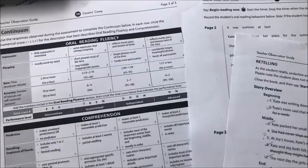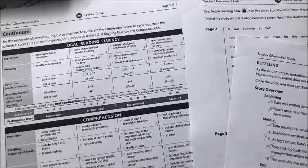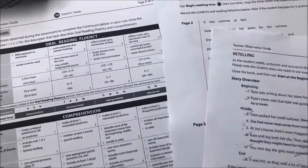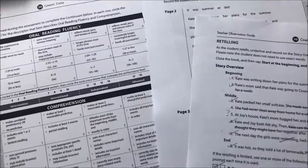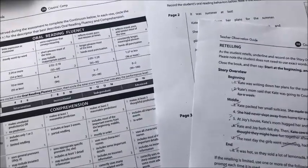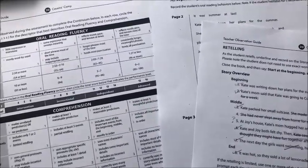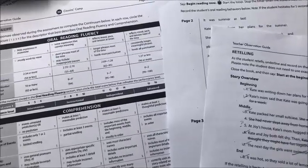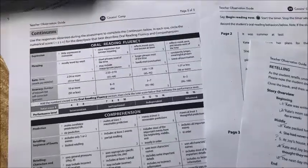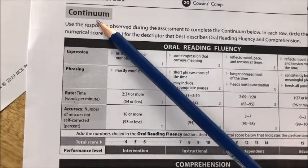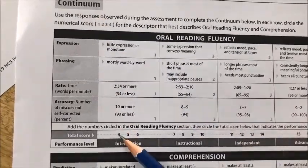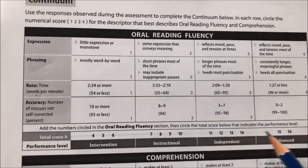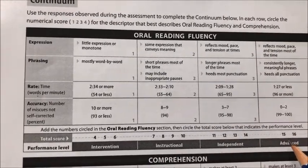We've completed the oral reading fluency test with the student, the MISQ analysis, and the retelling and comprehension protocols. So now we're going to take a look at where the student falls on the continuum. The continuum provides descriptors for intervention, instructional, independent, and advanced levels.